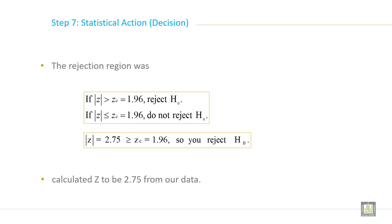So step 7 of hypothesis testing is a statistical decision. On the basis of critical value and Z calculated, just decide whether you accept or reject your hypothesis.